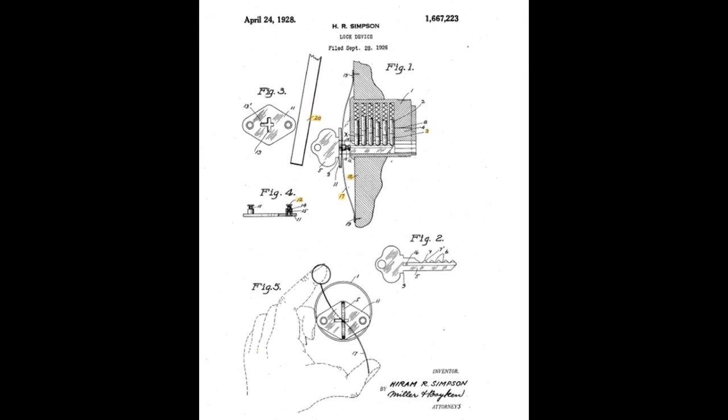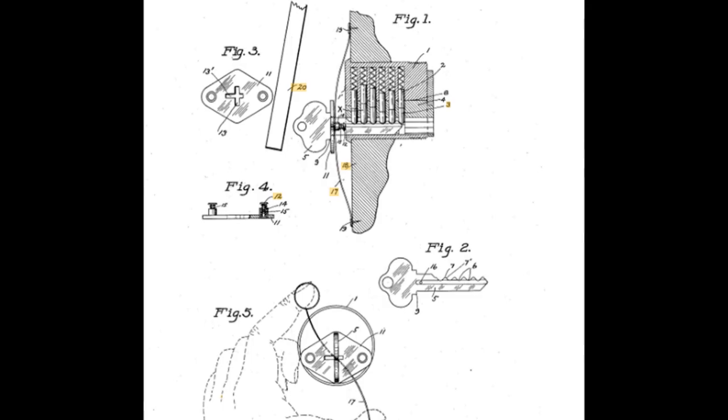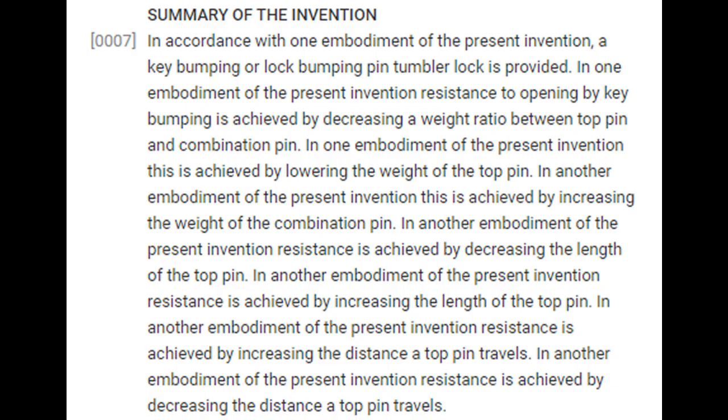But rather than try and understand all that malarkey, let's have a look at what the writing says. In accordance with one embodiment of the present invention, a key bumping or lock bumping pin tumbler lock is provided.